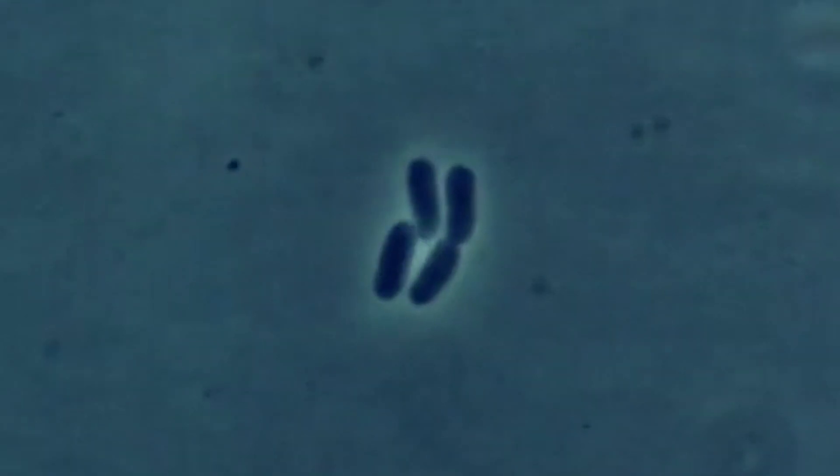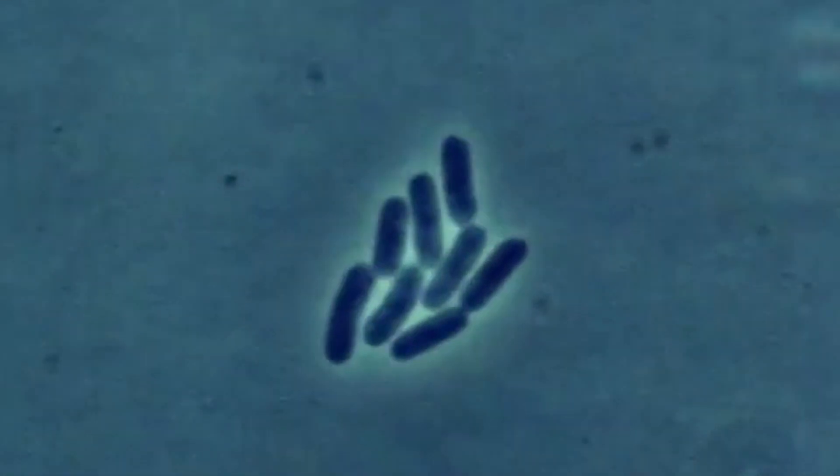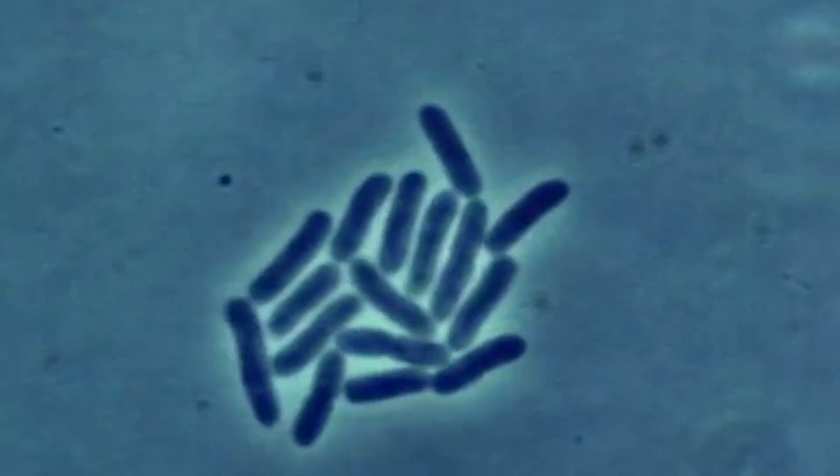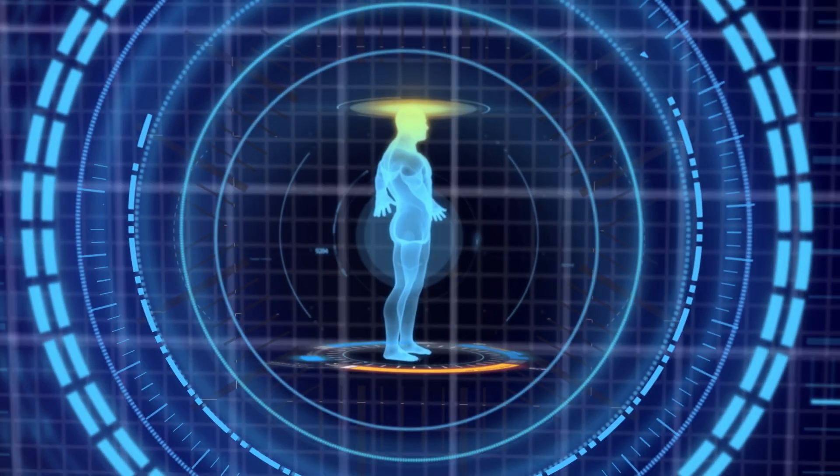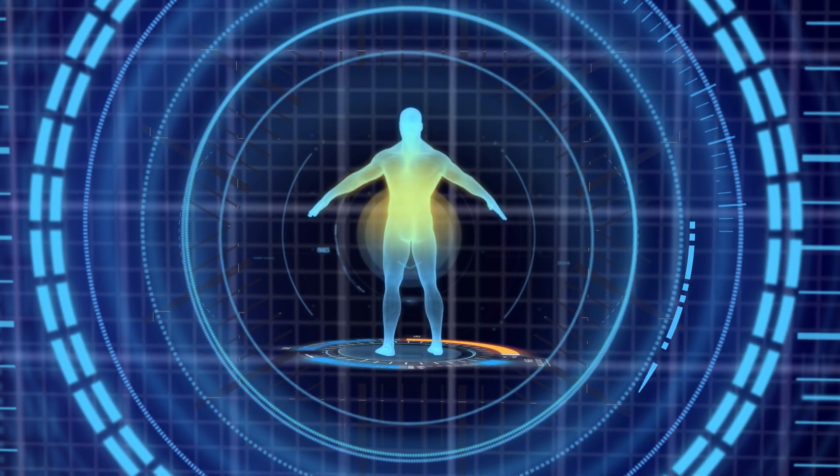Borrelia burgdorferi is a pleomorphic bacteria, meaning it can change its shape and size according to its environment. The result is that the body won't recognize it as a threat in certain forms.